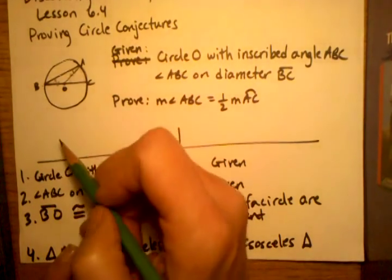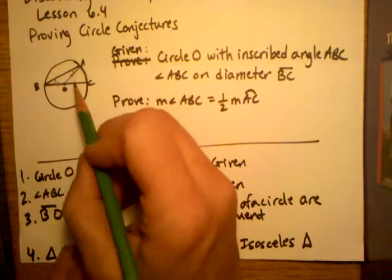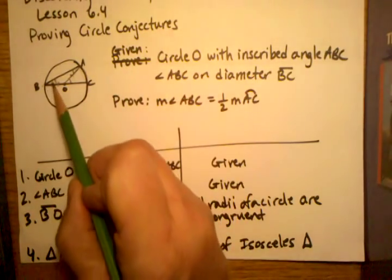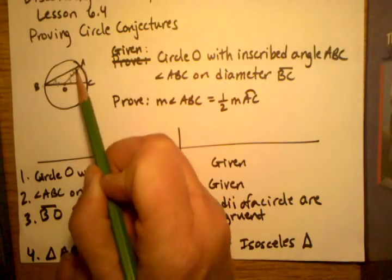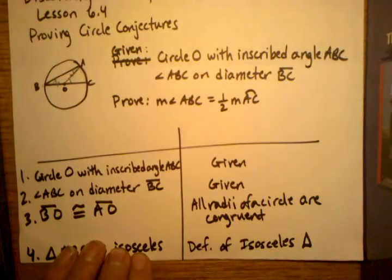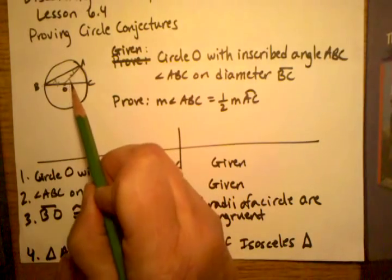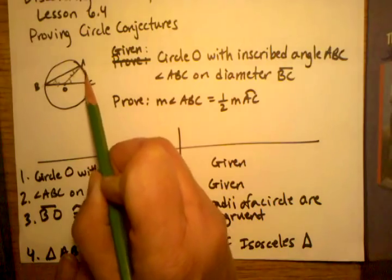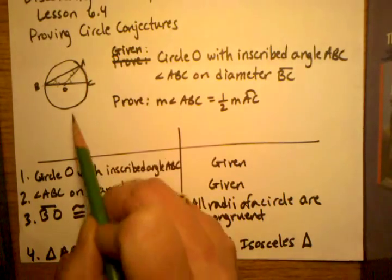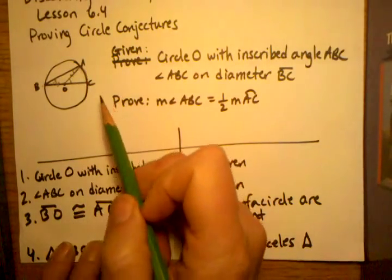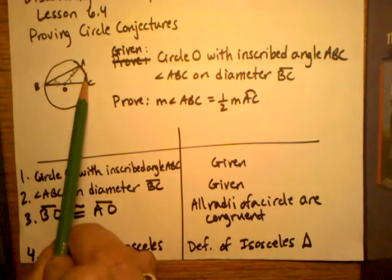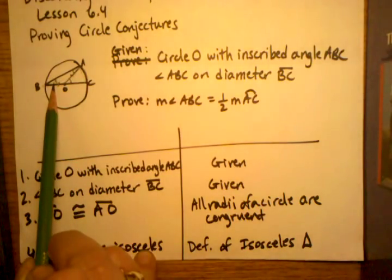Another thing I know is that an exterior angle is equivalent to the sum of the two opposite angles in a triangle. Now that might get me closer to where I need to be, because if I knew what this angle was, then I would immediately know what the measurement of this arc is. And knowing the measurement of this arc, I can hopefully deduce something that will relate back to this angle over here.